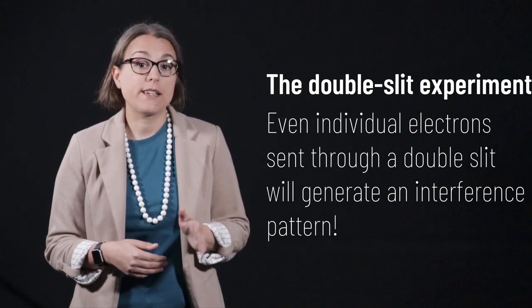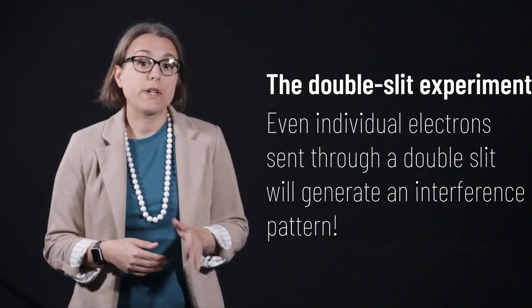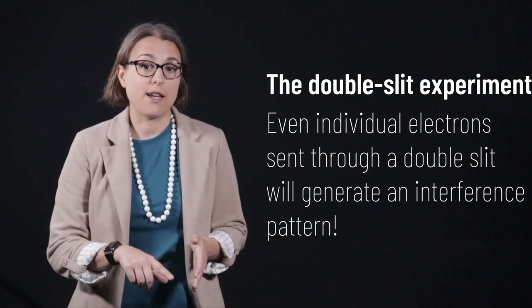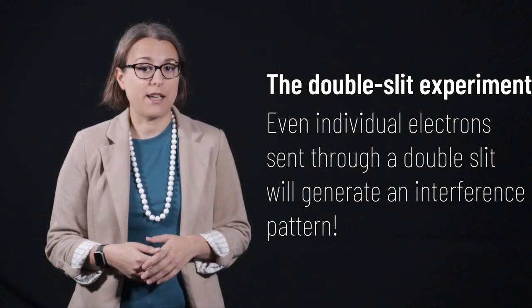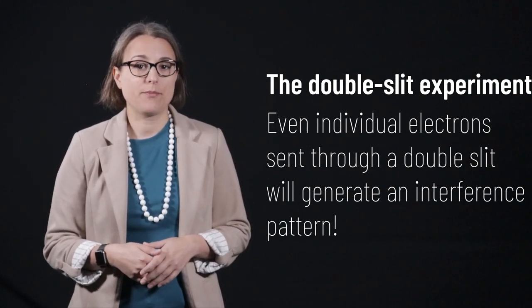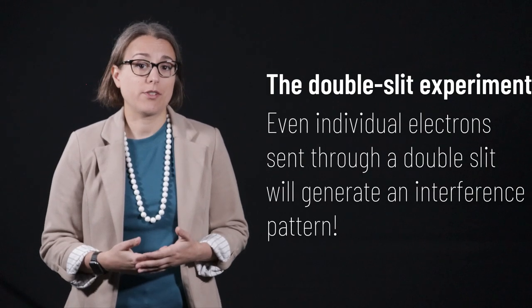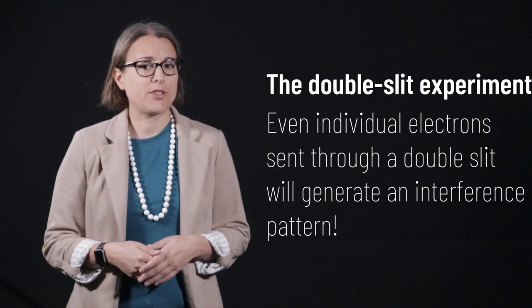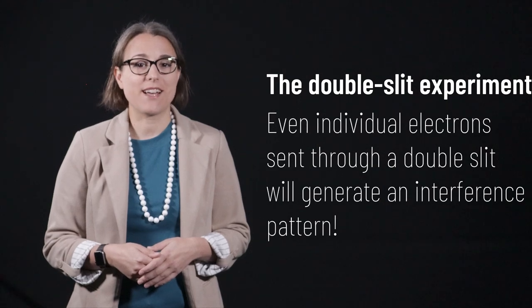And just as with single photon experiments, when electrons are shot through the double slit one at a time, they will, over time, create an interference pattern. Not only do electrons act like waves, but they do so in a way that cannot be explained by classical physics.